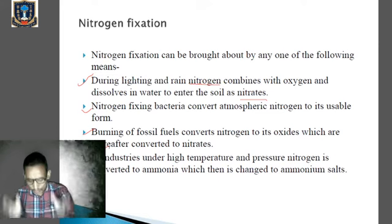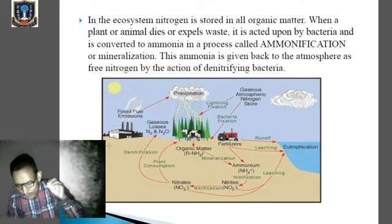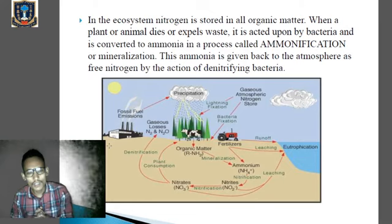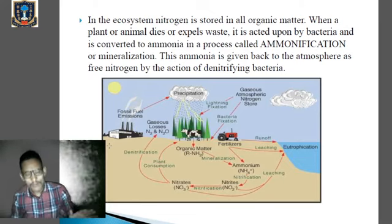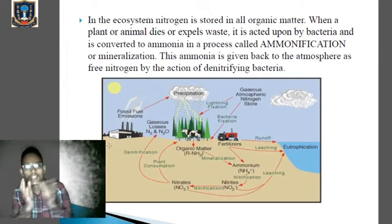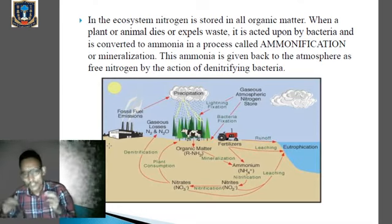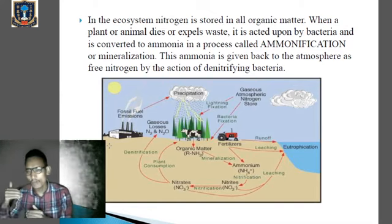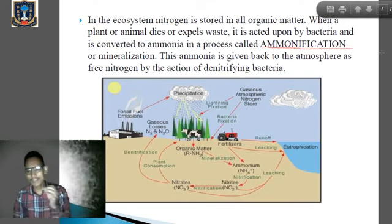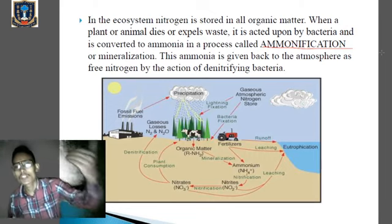Plants mainly use the nitrogen taken in to make proteins. Animals get their share of nitrogen by consuming living or dead organic matter. Nitrogen is stored in all organic matter in the ecosystem. When a plant or animal dies, or whenever organisms expel waste products or excreta, it is acted upon by nitrogen-fixing bacteria which convert this nitrogen into ammonium ions. This process is known as ammonification, or mineralization. So the conversion of nitrogen into ammonia by the action of nitrogen-fixing bacteria is known as ammonification.